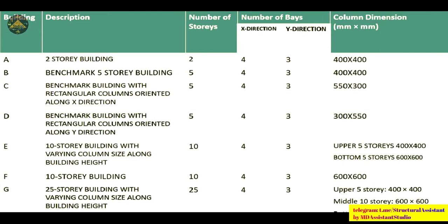Building A is a two-story building with 4 bays in X and 3 in Y, and column dimension 400 by 400. Building B is a benchmark 5-story building with 4 bays in X and 3 in Y, column dimension 400 by 400. Building C is a benchmark building with rectangular columns oriented along the X-direction, with column size 550 by 300.